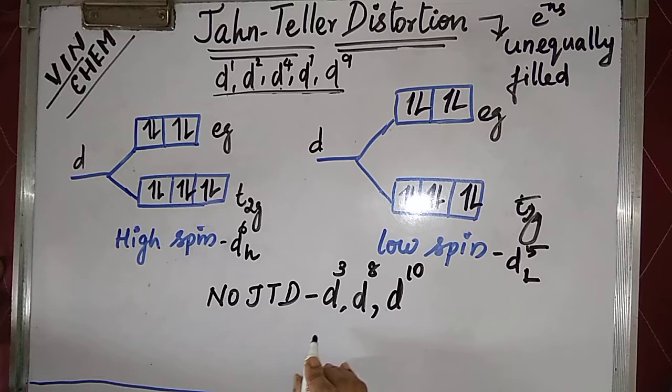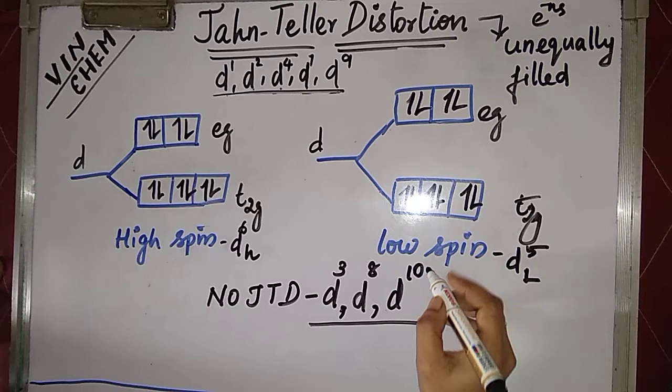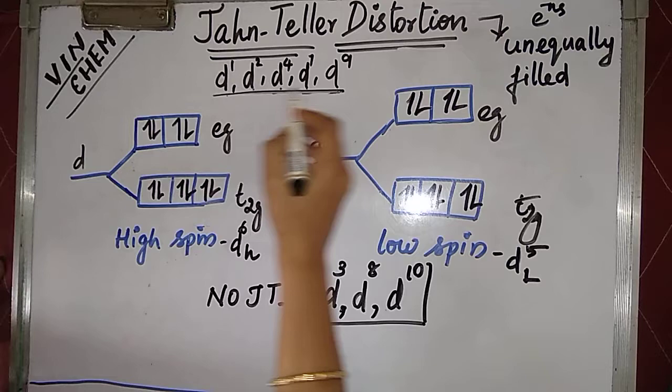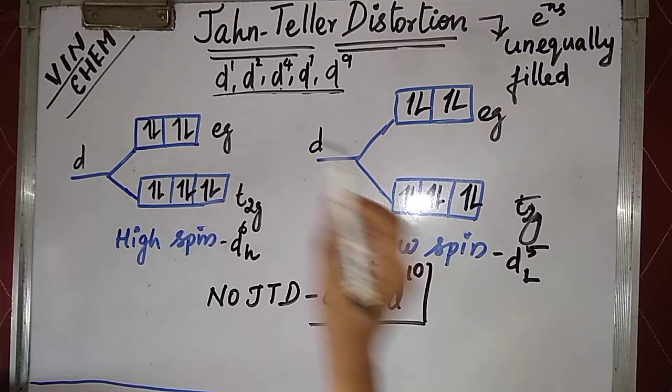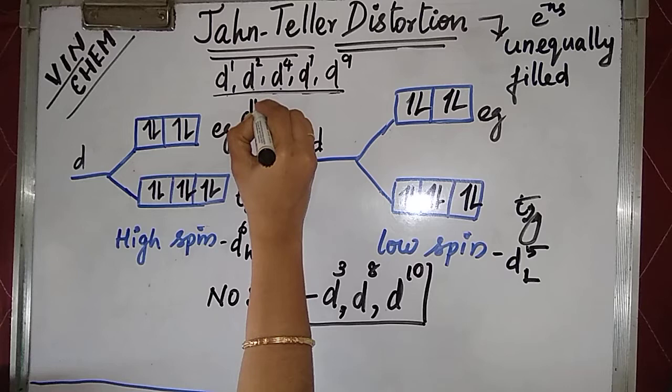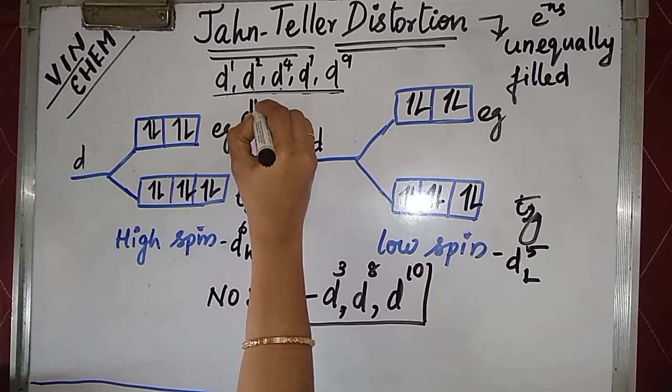So the three cases which do not have a distortion are d3, d8, and d10. If you can memorize these three, it's helpful. But if you know all seven cases that do have distortion — d1, d2, d4, d7, d9 (irrespective of spin), plus d5 low spin and d6 high spin — that's even better. Memorizing these seven values allows you to easily answer all questions related to Jahn-Teller distortion. Thanks for watching.